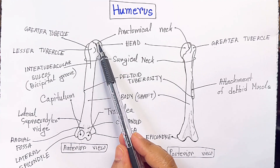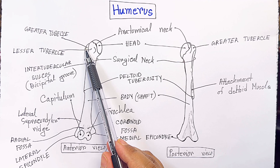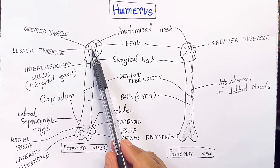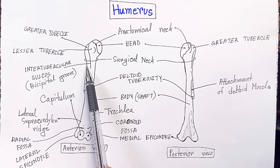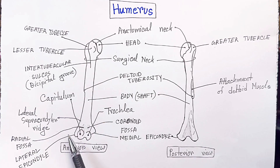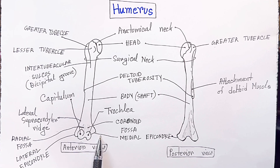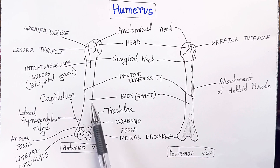This is the lateral epicondylar ridge. This is the capitulum and this is the trochlea — so this is the anterior view of the humerus. This is the head of the humerus and this is the anatomical neck, this is the greater tubercle, this is the lesser tubercle, then the surgical neck, then the intertubercular sulcus or bicipital groove, this is the deltoid tuberosity, this is the lateral supracondylar ridge, this is the radial fossa, then the lateral epicondyle, medial epicondyle, this is the capitulum and this is the trochlea, and the body or shaft of the humerus.